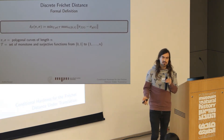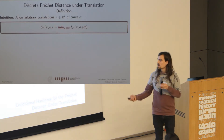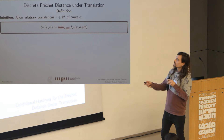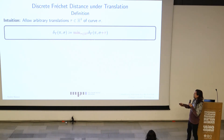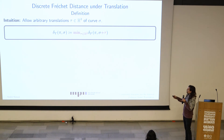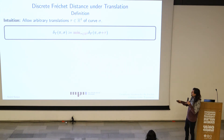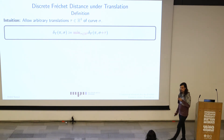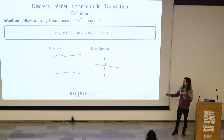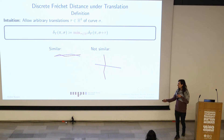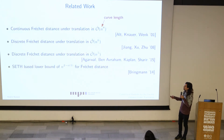The title says Fréchet distance under translation, not just Fréchet distance. Instead of just computing the Fréchet distance, we can translate one curve by tau — we are in the plane. We want to find the best translation such that the Fréchet distance of the first curve and the second translated curve is minimized. That's the Fréchet distance under translation. On the left we see two quite similar curves, and on the right two not-so-similar curves, because we can translate the first curve up for the similar case, but for the second there's no good alignment.